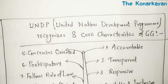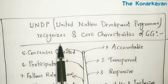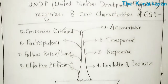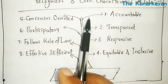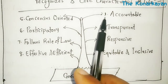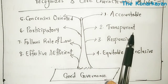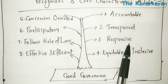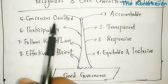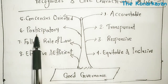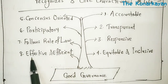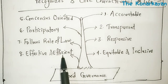The United Nations Development Program recognizes eight core characteristics of good governance. These eight characteristics are: accountable, transparent, responsive, equitable and inclusive, consensus oriented, participatory, follows rule of law, and eighth is effective and efficient.